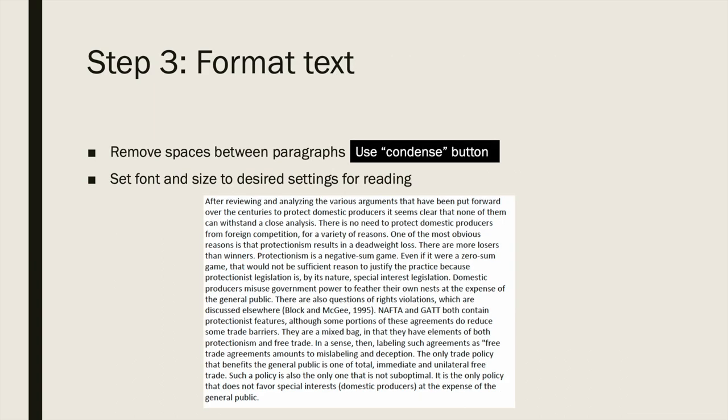Step three: format the text. Remove the spaces between paragraphs. If you have Verbatim, you can just highlight all the paragraphs and hit the condense button — it'll make them all one big block of text. Then set the font and size to your desired reading setting. I would typically use a bigger font like 14-point, just to make it stand out, but whatever font size is preferable for you, now is the time to set that.